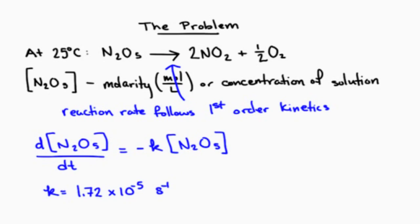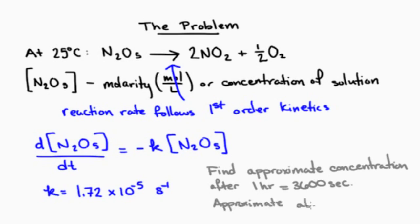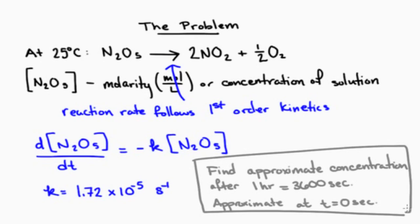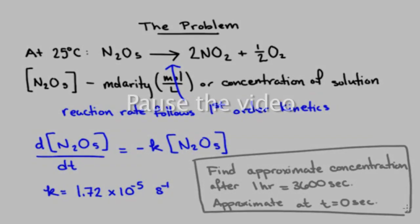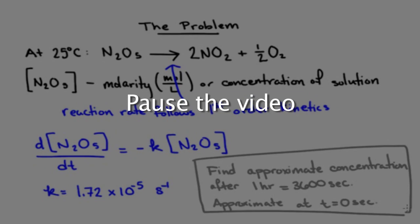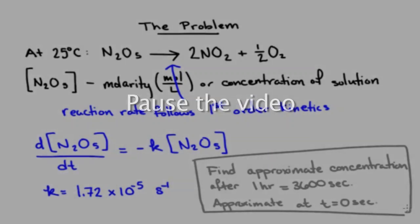Because you are panicking, you are having a hard time solving this differential equation. Instead, find the approximate decomposition in the N2O5 solution after one hour using a linear approximation at time t=0. Note that because the reaction constant has units of inverse seconds, the variable t must have units of seconds.